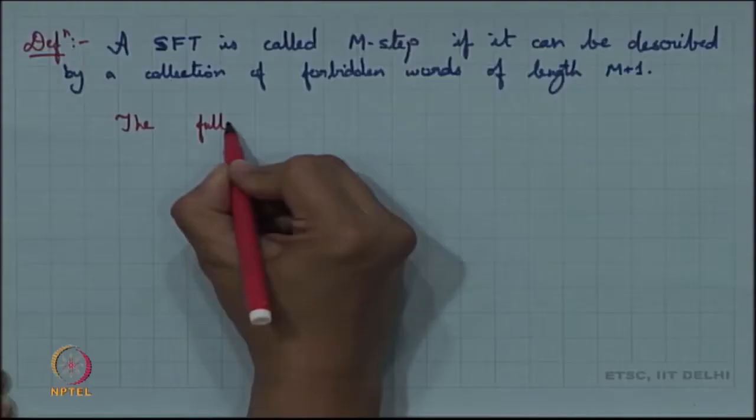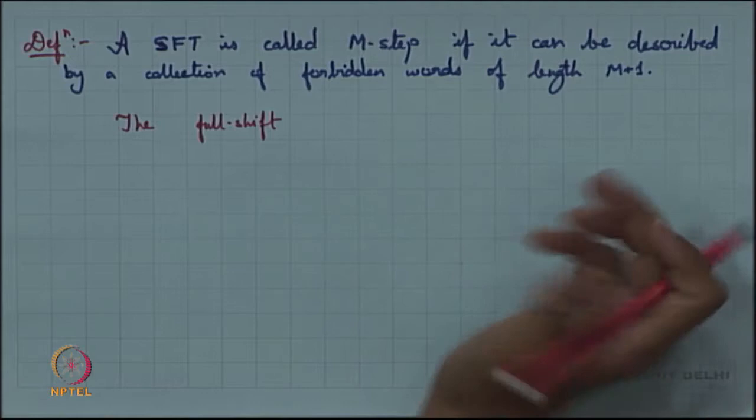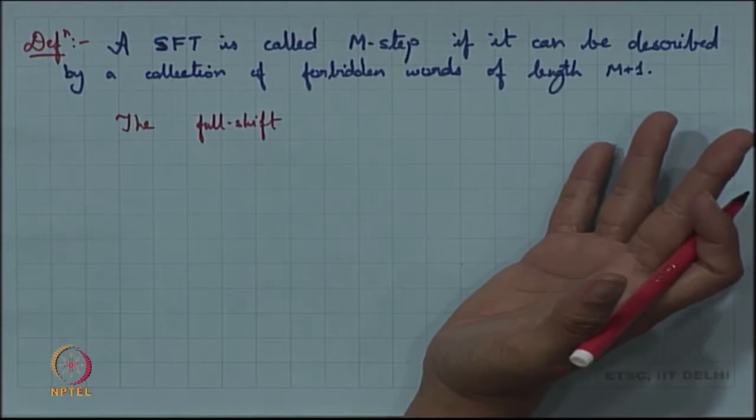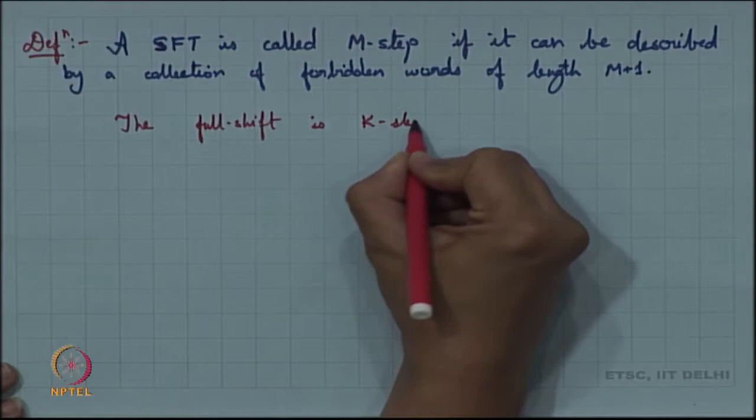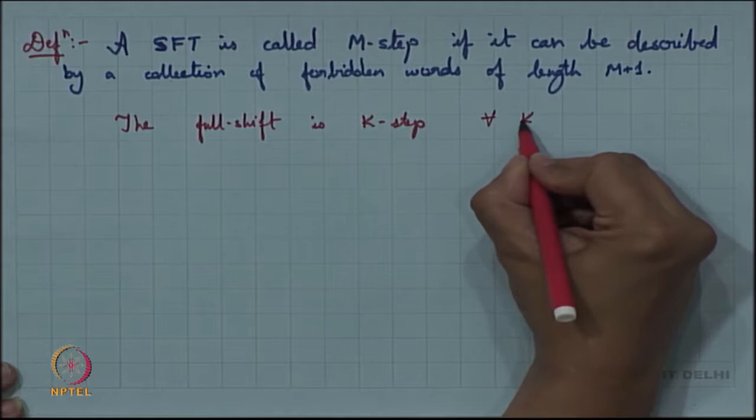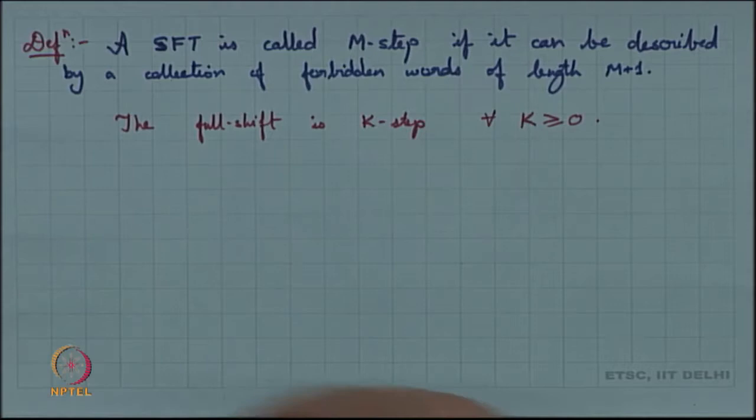For the full shift, the forbidden words are empty. I can describe the forbidden words in terms of length 1, length 2, length 3, and so on. So the full shift is k-step for all k greater than or equal to 0 — the full shift is a very special kind of subshift of finite type.